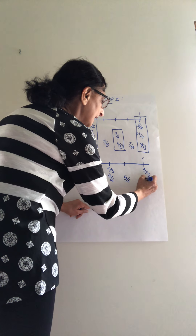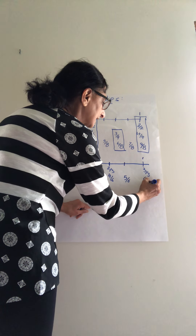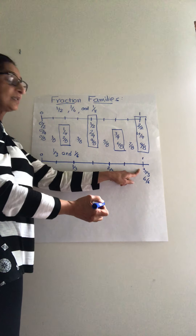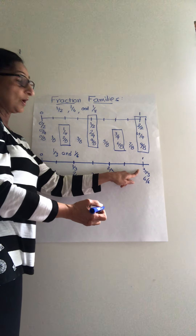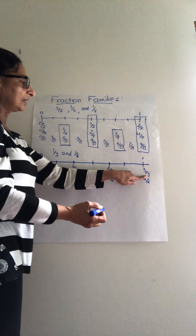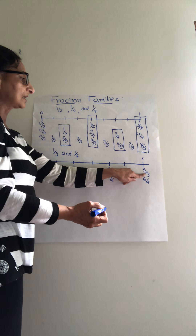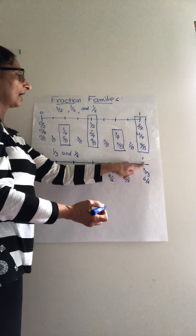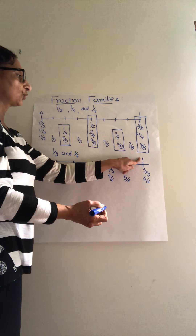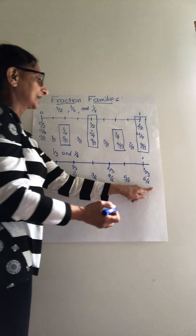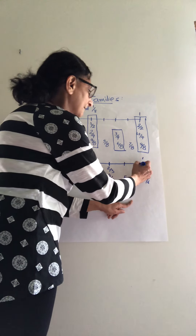When I mark the sixths, I say: zero-sixth, one-sixth, two-sixth, three-sixth, four-sixth, five-sixth, and six-sixth. Again, when the numerator and denominator are the same, it is one whole — three-third and six-sixth.